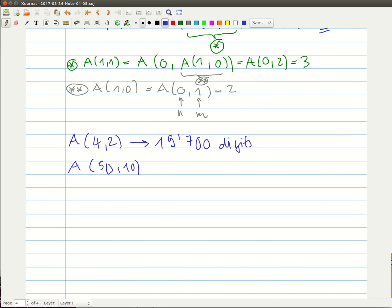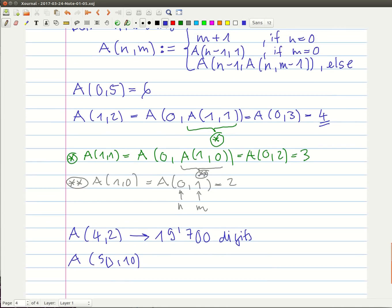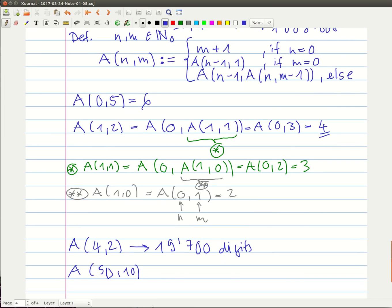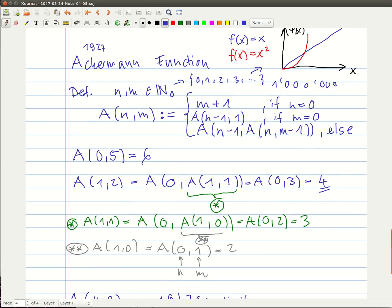I think Ackermann used this definition to determine whether things can be computed or not. I mean, for computers, this function can pose a big problem. It's just very challenging to deal with very large numbers. It can be. Okay. Well, that's it. I hope you learned something about the Ackermann function.